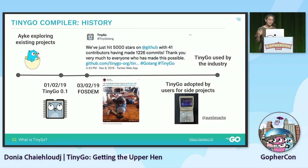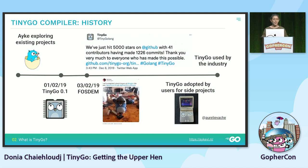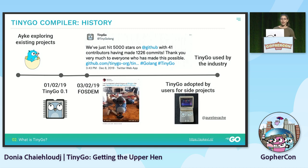On January 1st, 2019, the first version of TinyGo was released. A few days later, Ron Evans presented it at FOSDEM, which is an open-source conference in Europe. By the end of that year, many contributors and commits appeared, and it was the beginning of a rising project.